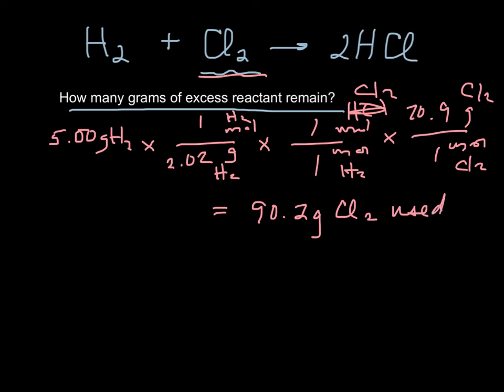So if I use 5 grams of hydrogen, I use 90.2 grams of chlorine. That's how those are related to each other. That's how much I used up.